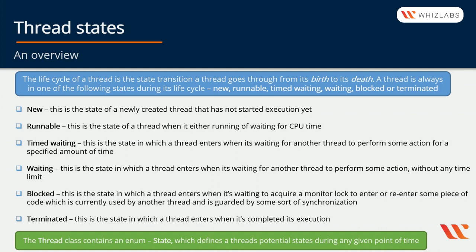The life cycle of a thread is the state transitions a thread goes through from its birth to its death. A thread is always in one of the following states during its life cycle: New, Runnable, Timed Waiting, Waiting, Blocked, or Terminated. On this slide we'll briefly explain what each state means and then we'll continue with a complete diagram.